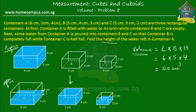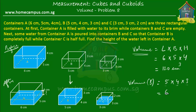Some water from A was poured into B and into C. How much water was poured into B? If container B was filled to the brim, then the amount of water poured into B equals the capacity of the container. Volume of container B is equal to 5 times 4 times 3 — the length times the breadth times the height. That would be 5 times 4 is 20, and 20 times 3 is 60 — so 60 cubic centimeters.